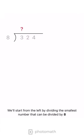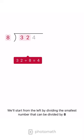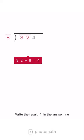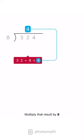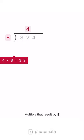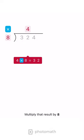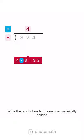We'll start from the left by dividing the smallest number that can be divided by 8. Write the result, 4, in the answer line. Multiply that result by 8. Write the product under the number we initially divided.